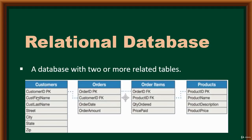In the customers table, we have a customer ID as a primary key. In the orders table, we also have a customer ID — the relationship is shown by a dot. Similarly, order ID links the orders and order items tables, and product ID links the products and order items tables.